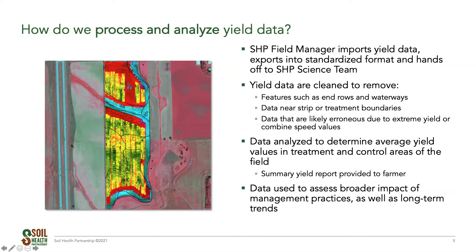How do we process and analyze yield data here at the Soil Health Partnership? Our field managers work with growers, collect the yield data, and import it into software designed to read the raw data. If you just open it up, you get ones and zeros, Greek letters, and symbols — not in a usable format. So we convert it into a generic format we can work with. Then we clean out areas such as end rows, long waterways, and any features that may have more compaction or where equipment is turning around.